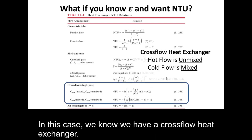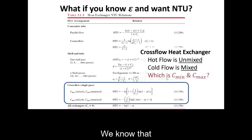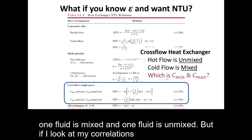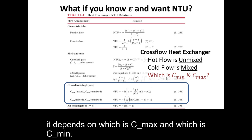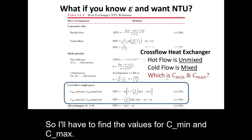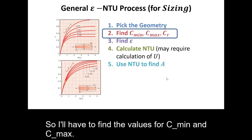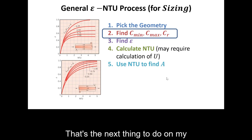In this case, we know we have a cross flow heat exchanger. We know that one fluid is mixed and one fluid is unmixed. But if I look at my correlations, it depends which is C max and which is C min. So I'll have to find the values for C min and C max. That's the next thing to do on my process flow.